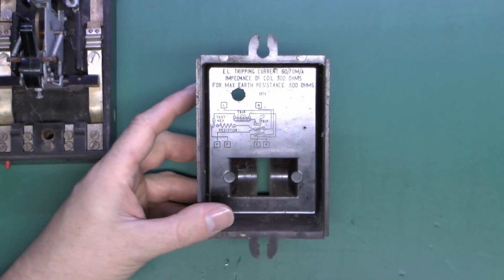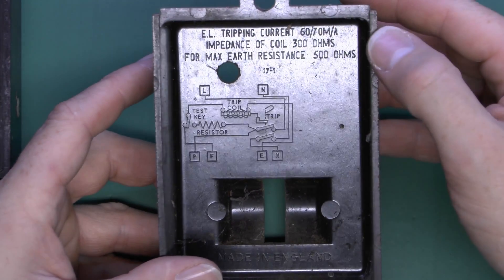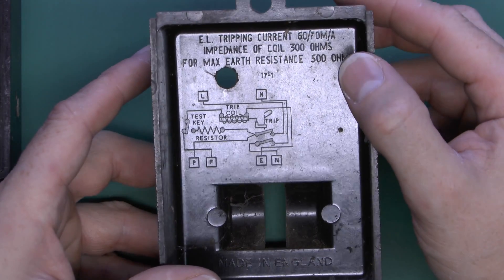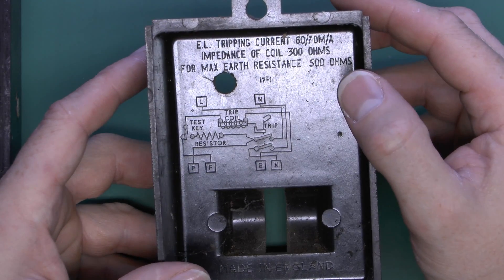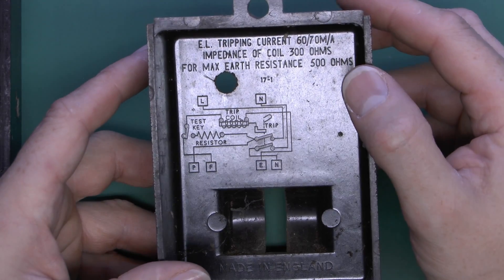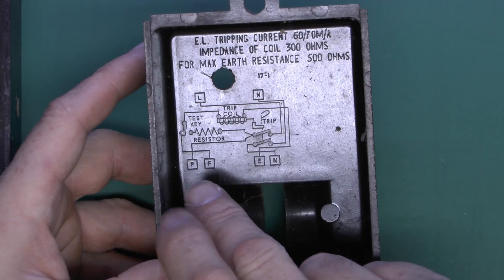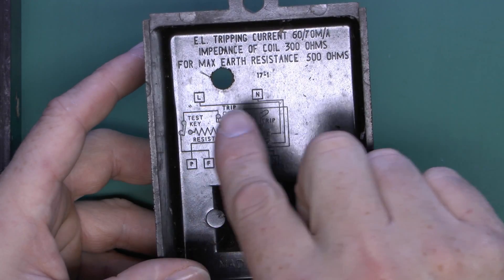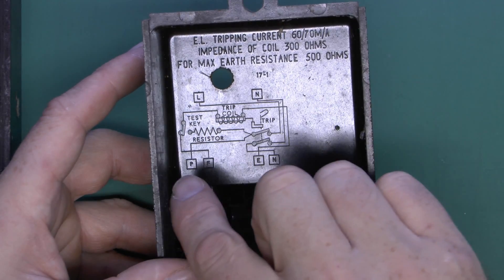On the lid here, first of all we've got a nice diagram inside which shows the wiring. Let's see here: coil impedance of 300 ohms, designed for maximum earth resistance of 500.